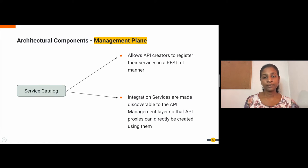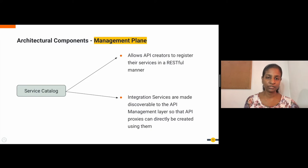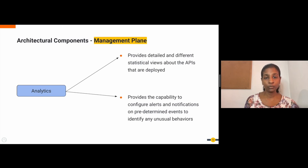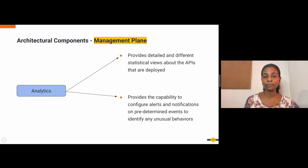The service catalog allows API creators to register their services in a RESTful manner. This component is one of the main attributes that enable API-first integration in WSO2 API Manager. Through the service catalog, integration services are made discoverable to the API management layer so that API proxies can directly be created using them. The analytics component provides detailed statistical views about the APIs deployed in WSO2 API Manager, and you can also configure alerts and notifications on predetermined events to identify any unusual behaviors.